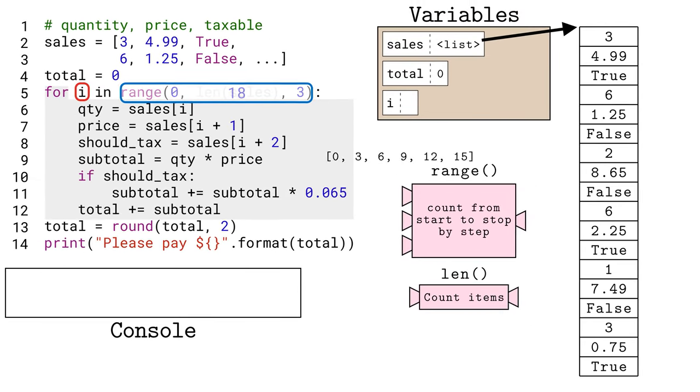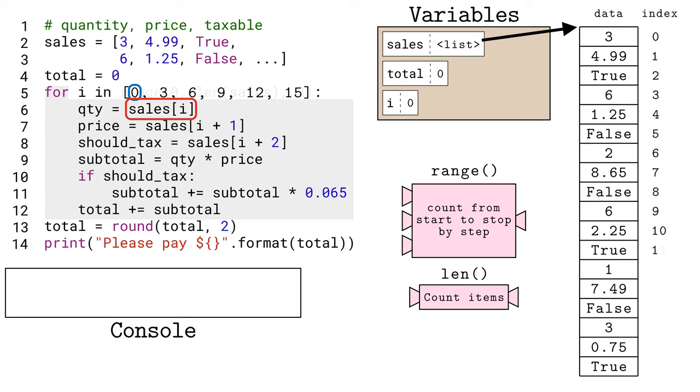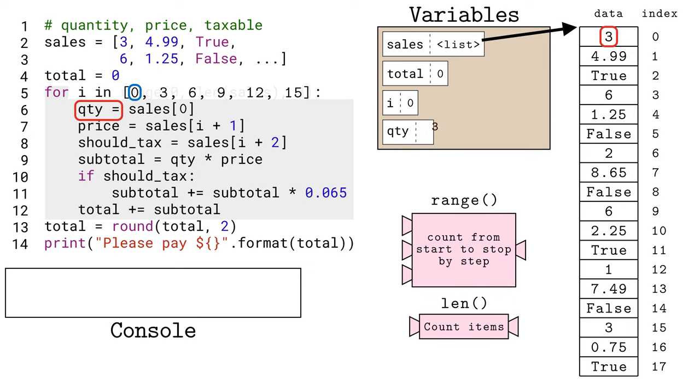This list of numbers is what the loop variable i will step through, thus it starts at the beginning with zero. Python can now run the code in the loop. The variable named sales, followed by square brackets with i in it, means to use the zero from the i variable to extract the element at index zero from the sales list. This is the first element, because Python starts counting at zero. This first element is then stored to the variable qty, short for quantity.